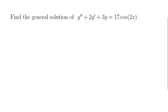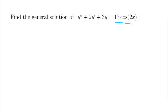We want to find the general solution of this differential equation: y double prime plus 2y prime plus 3y is equal to 17 times cosine of 2x. First, notice that this is a second order, linear, non-homogeneous — because we don't have zero on the right-hand side — differential equation with constant coefficients.